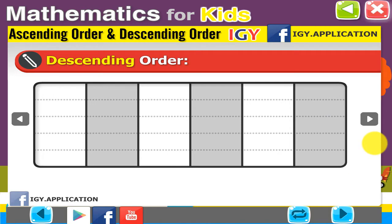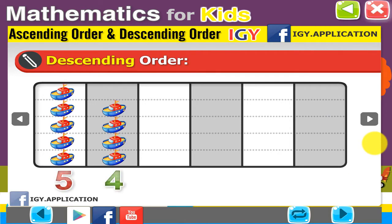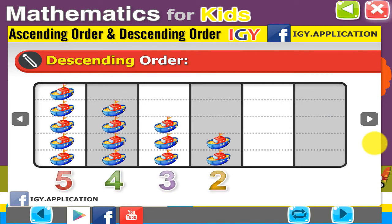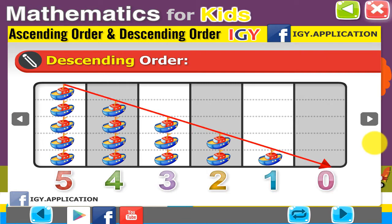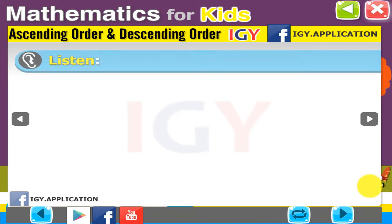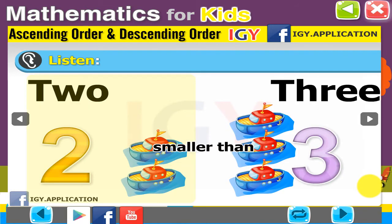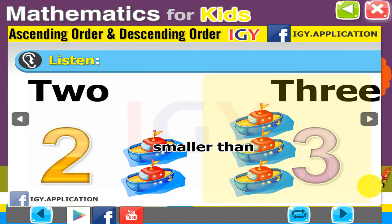Descending order: 5, 4, 3, 2, 1, 0 — from the greatest to the smallest. 2 is smaller than 3.